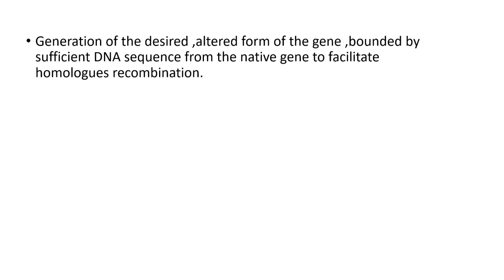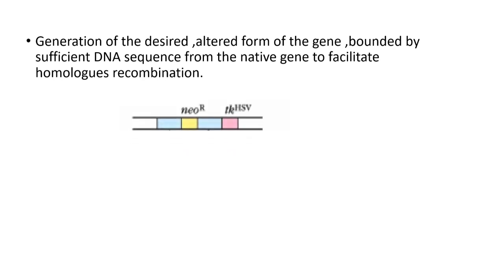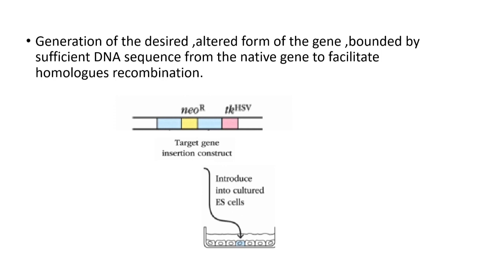Next, we need to generate the desired or altered form of the gene, bounded by sufficient DNA sequence to facilitate homologous recombination. Here we have the engineered insertion construct where the target gene is disrupted with the neomycin resistance gene. The thymidine kinase gene is located outside the target gene. We call this the target gene insertion construct.